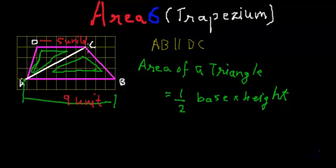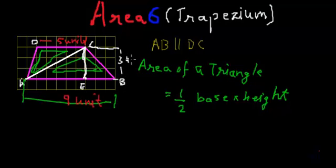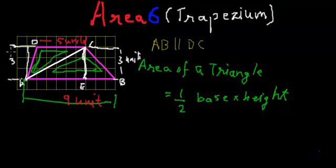For triangle ABC, from point C we draw a perpendicular to point E, and the length of this perpendicular is the height. That length is three units. So the height is three units. And since DC and AB are parallel, the height of triangle ADC will also be three units. If I draw a perpendicular from point A to the extended base of DC, that is the height of triangle ADC, and it will also be three units.